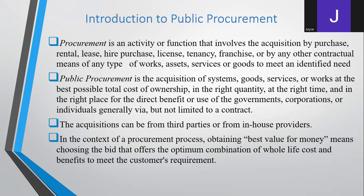Procurement can take different forms. For example, you can acquire goods by purchase through the normal procurement process, or you can rent an asset. Rental is normally shorter compared to lease — lease normally takes a very long time. You can pay rent maybe after every month, or lease a property even for 10 to 15 years. Lease is normally a longer-term arrangement.